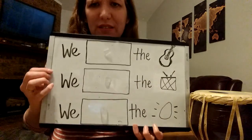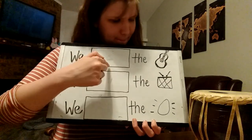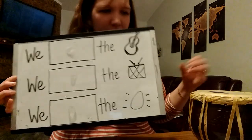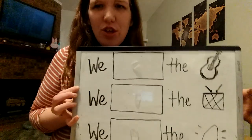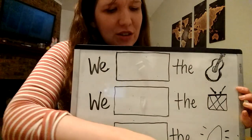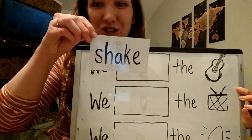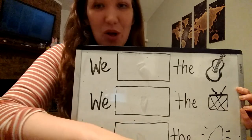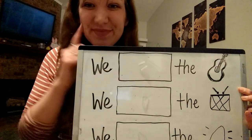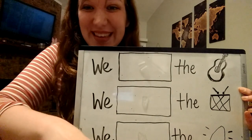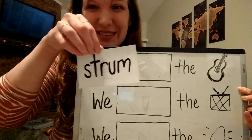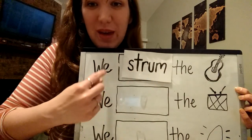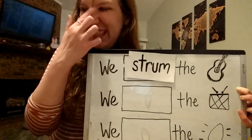What word goes here? We blank the ukulele. What do we do with it — do we shake it, strum it, or beat it? Yes, we strum. We strum the ukulele.